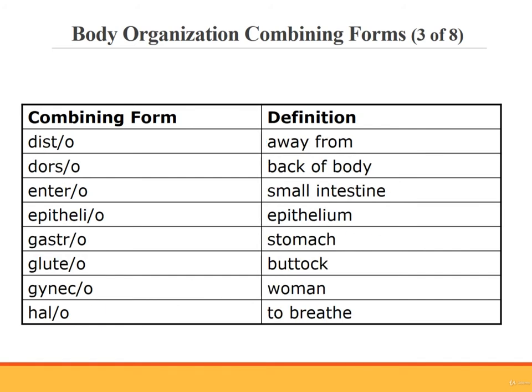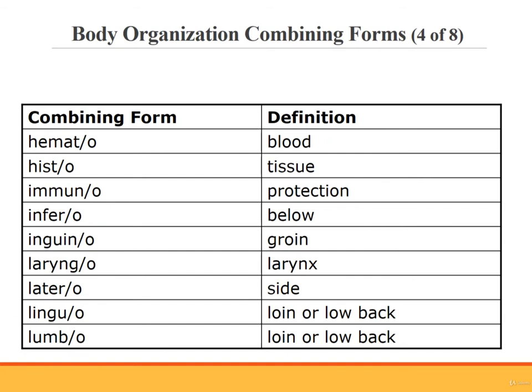Disto. Dorsal. Entero. Epithelo. Gastro. Gluteo. Gyneco. Hemo. Hemato, or hemato, meaning blood. An example of a medical term using the combining form hemato is hematology. Hematology means the study of blood.